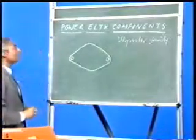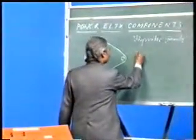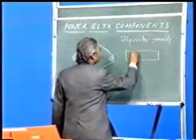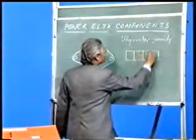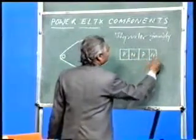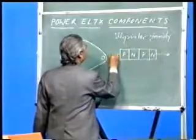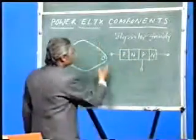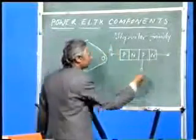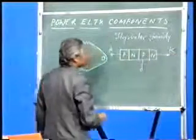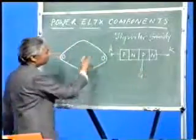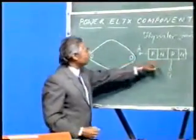SCR is a four-layer semiconductor device. The layer diagram can be drawn as P, N, P, N. Three terminals are there. The first terminal is coming out from the P layer, which is known as anode. The second one is coming from the N layer, which is cathode. And there is a third terminal coming out from the P layer, it is known as the gate. So the three terminals are anode, cathode, and gate.